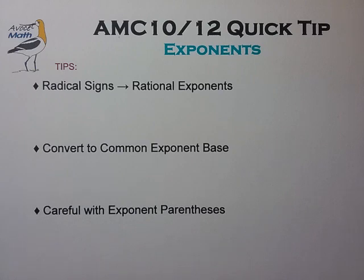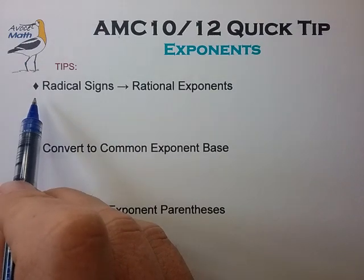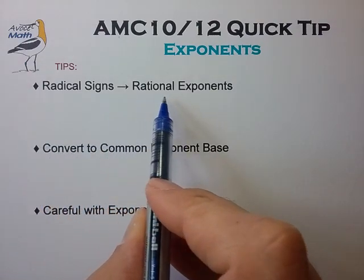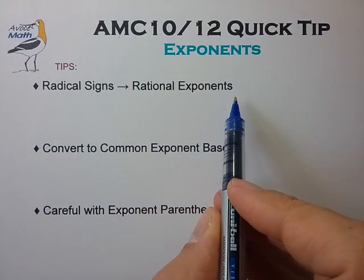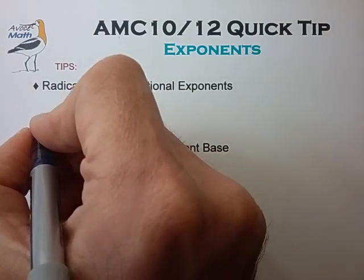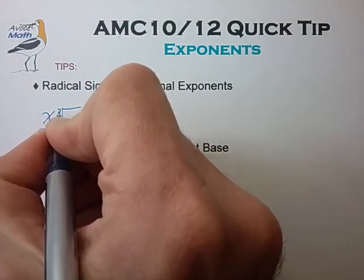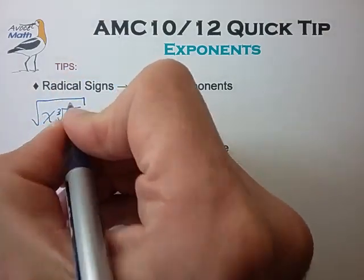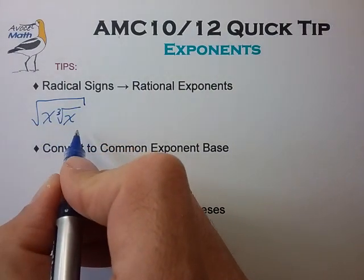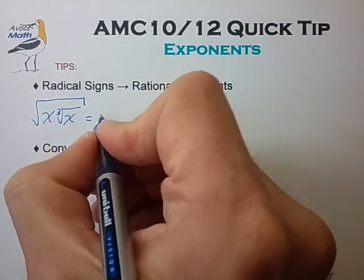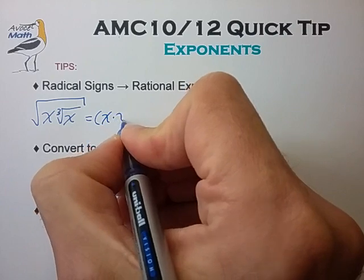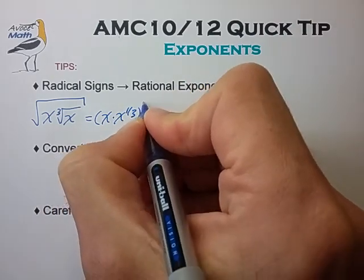Here are my top three tips for working with exponents in the AMC. First up is that you usually want to convert all radical signs to rational exponents. So for example, you encounter the expression x cube root of x all square root, you want to convert this expression to rational exponents. In this case, x times x to the 1/3 to the 1/2 and simplify where possible.